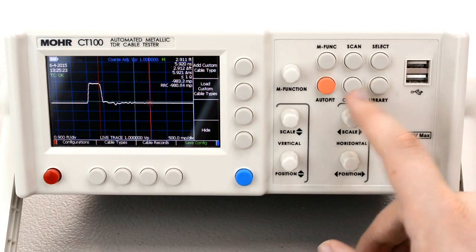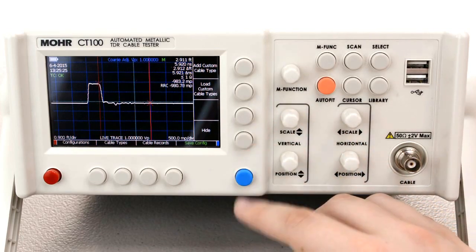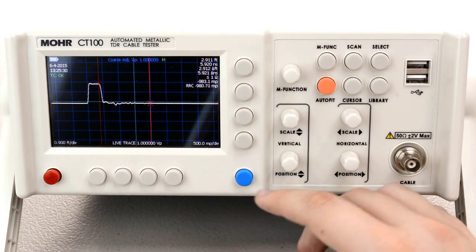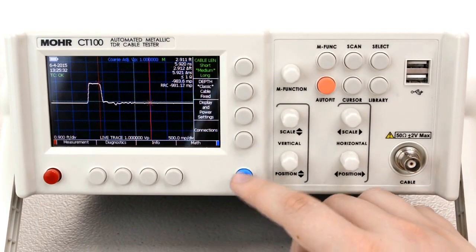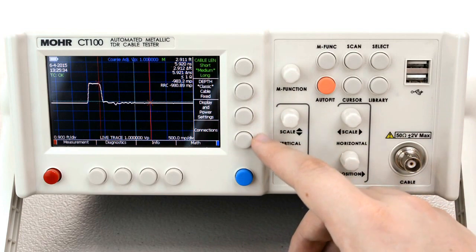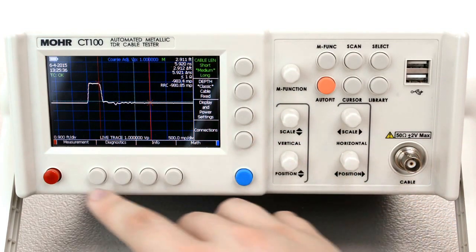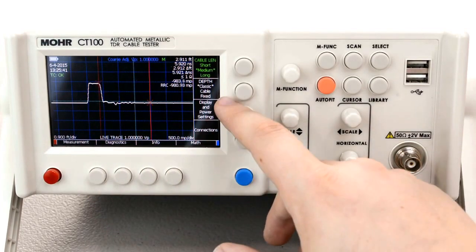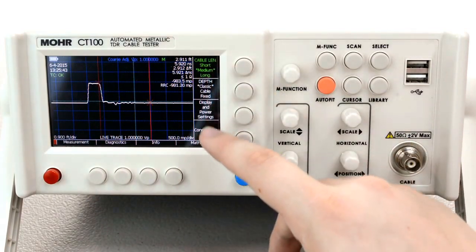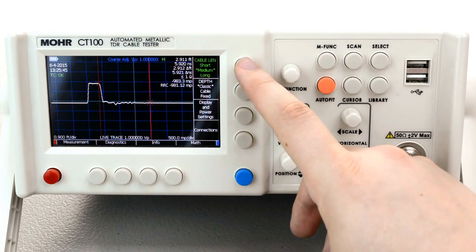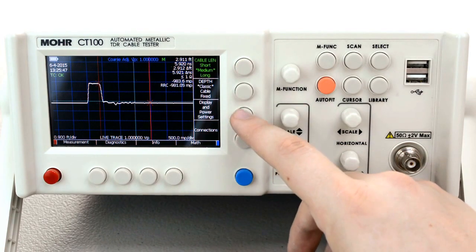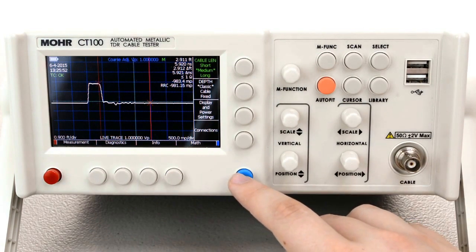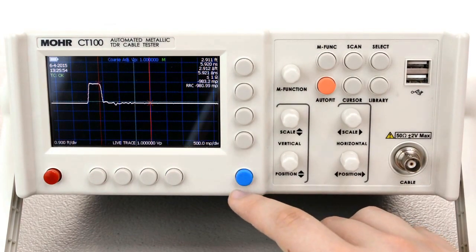The library button allows you to add custom cable types, load custom cable types and other such things and we'll get into that in a later video. Now each of these four buttons vertically and four buttons horizontally correspond to their selections in the menu. So for example this one changes cable length right now. This one would go to display and power settings. This one would go to math. Let's close that out.